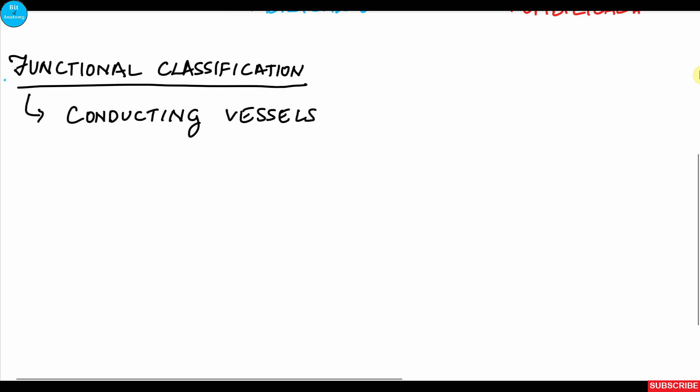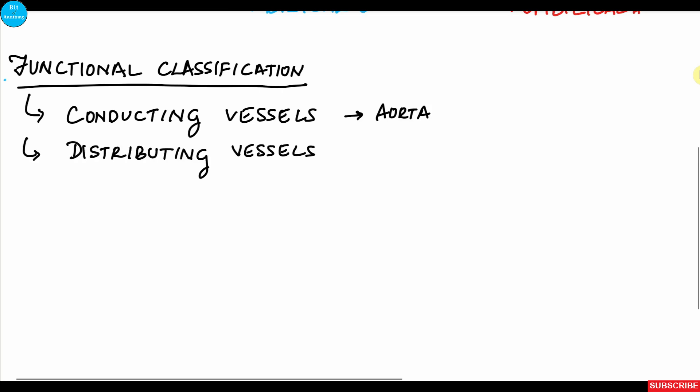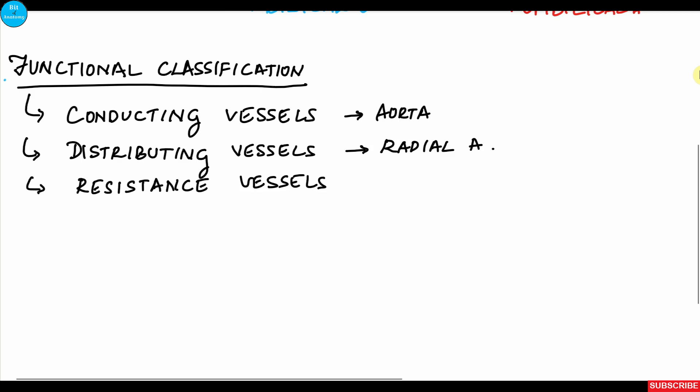Conducting vessels conduct blood from the heart to the next group of arteries. Examples include the aorta and the pulmonary trunk. Distributing vessels distribute blood to various organs of the body; examples include the radial artery and the gastric artery.